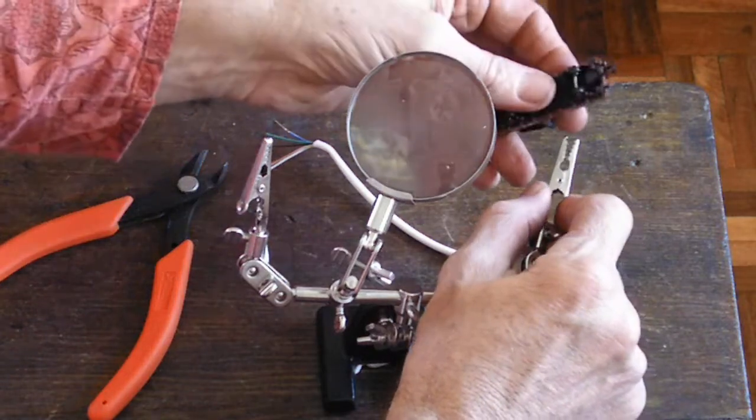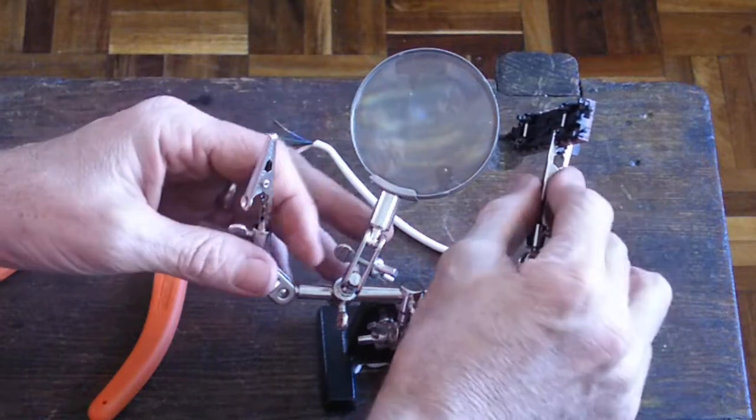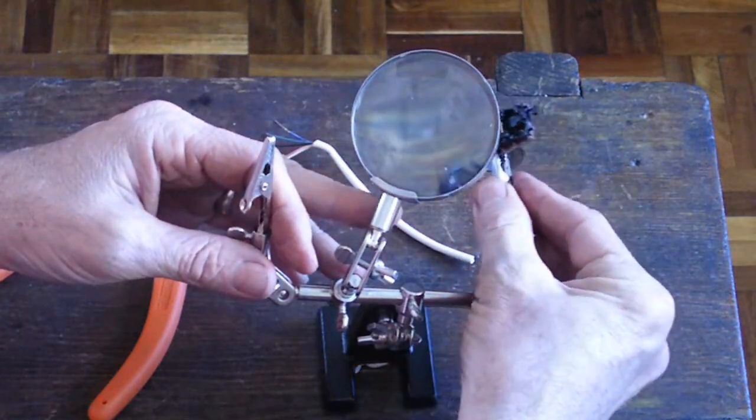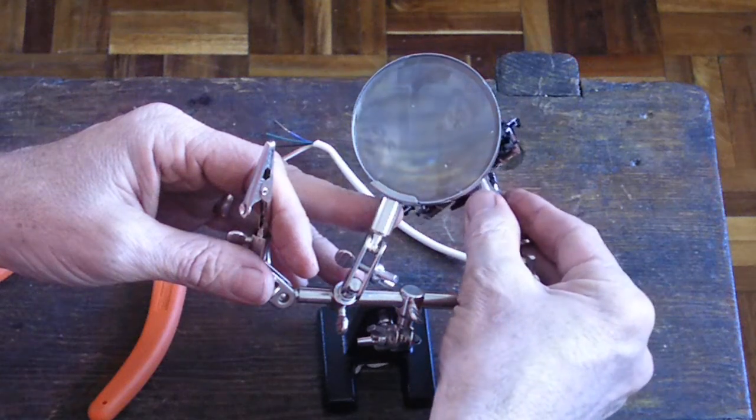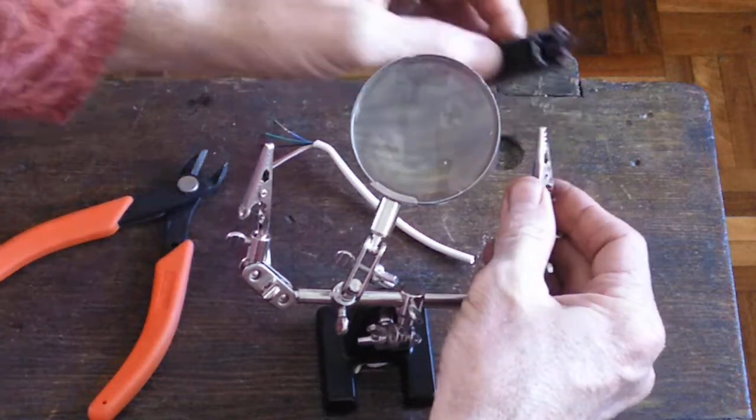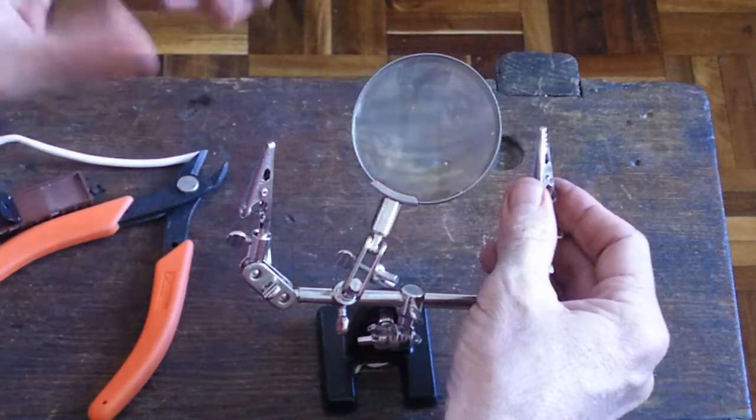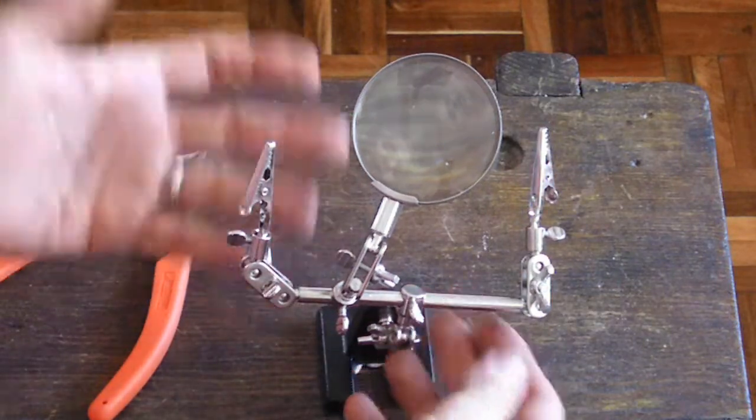For instance, if I get this little train set that I've got here, it's got little clips there as well. And if you bring it underneath the magnifying glass, you get a much better picture of what you're busy doing. Like I said, it can be used for a lot of other things as well. It doesn't only need to be for hobby making. It's really quite a quirky little item on itself.